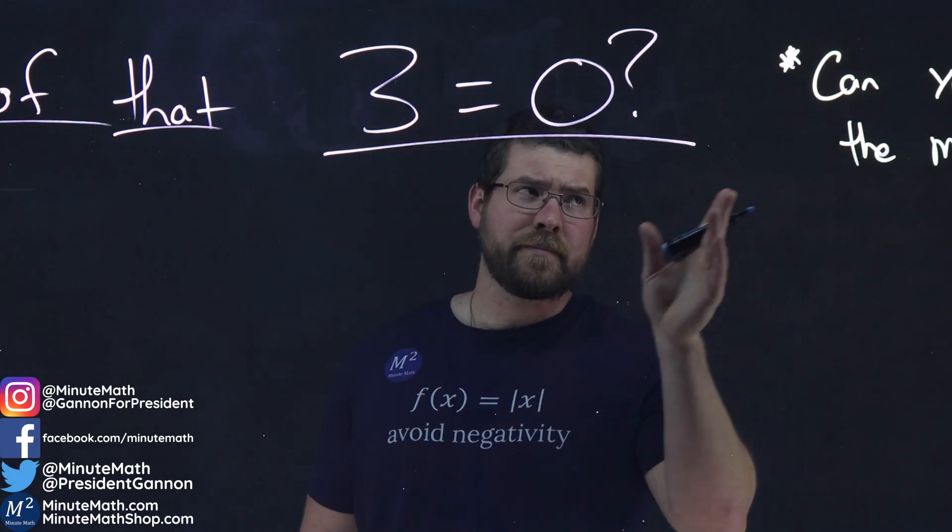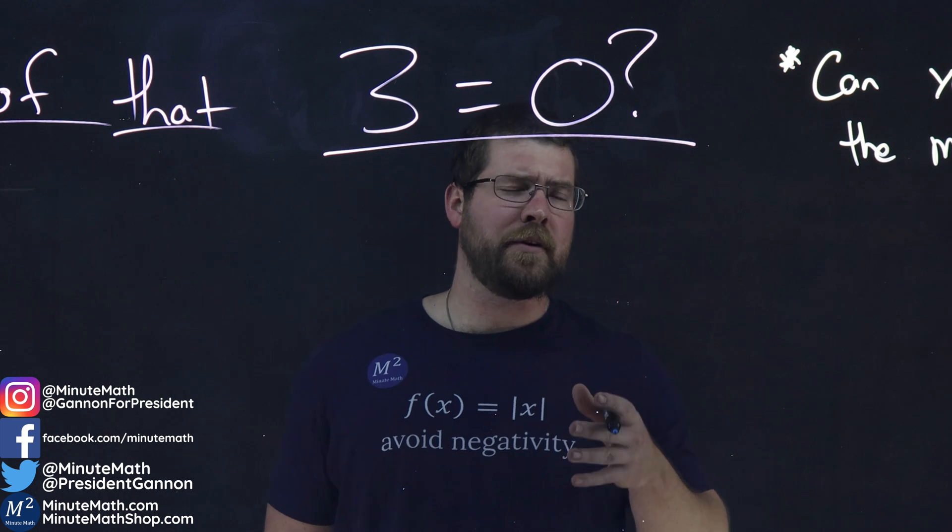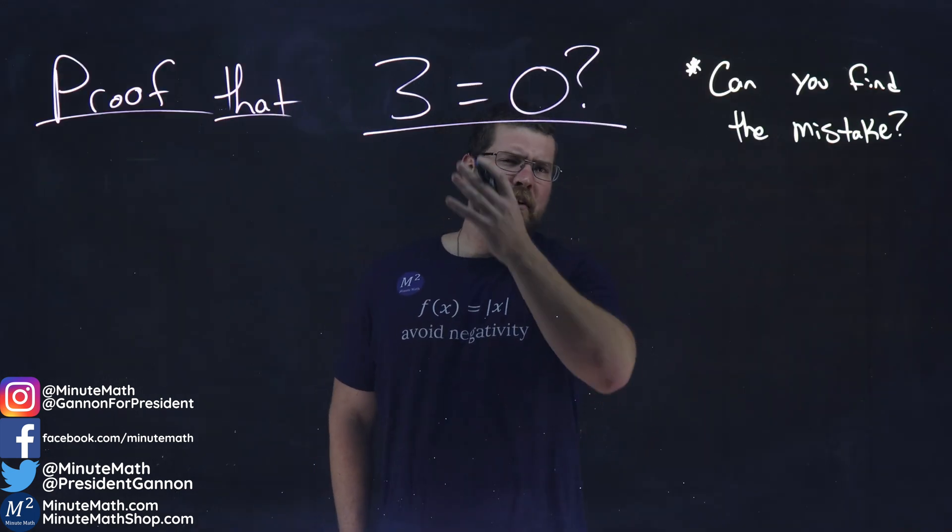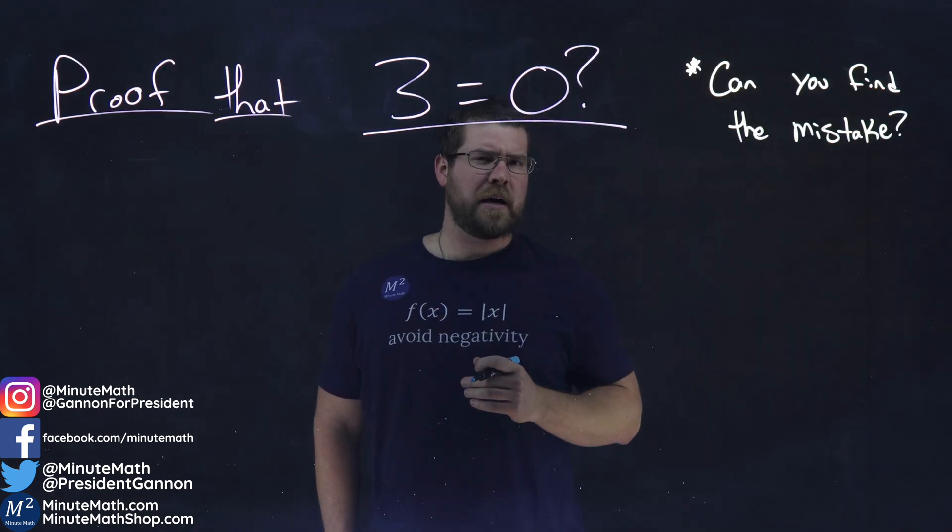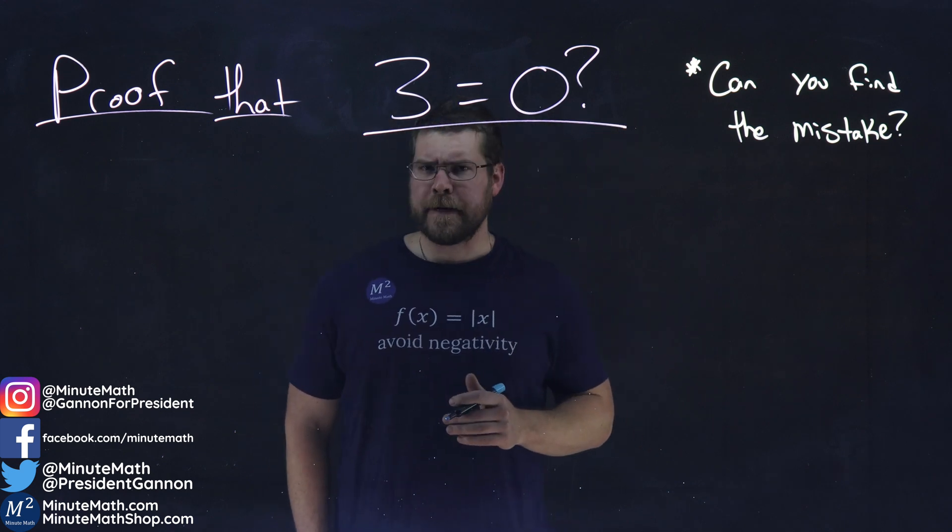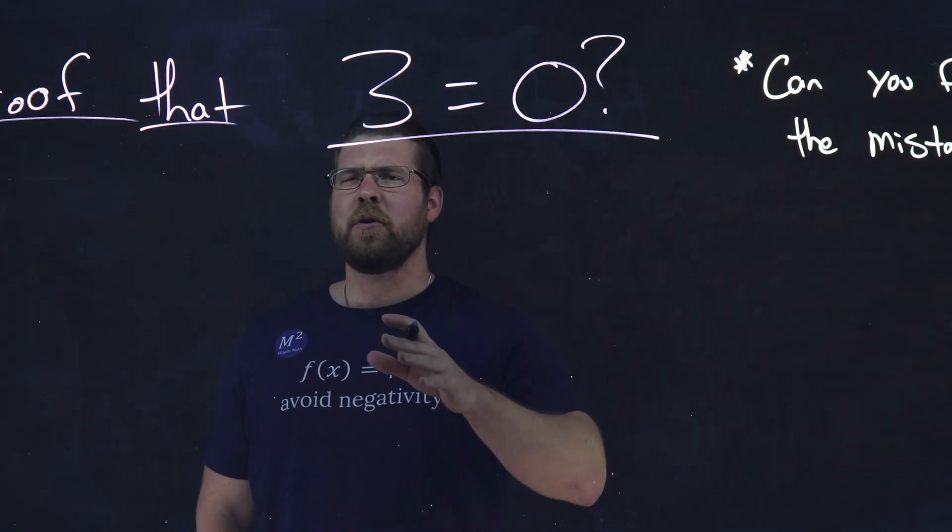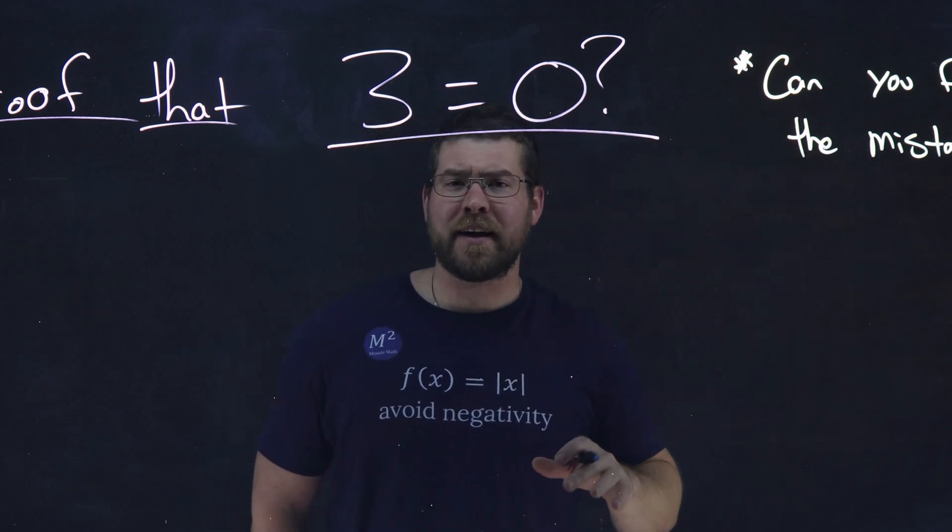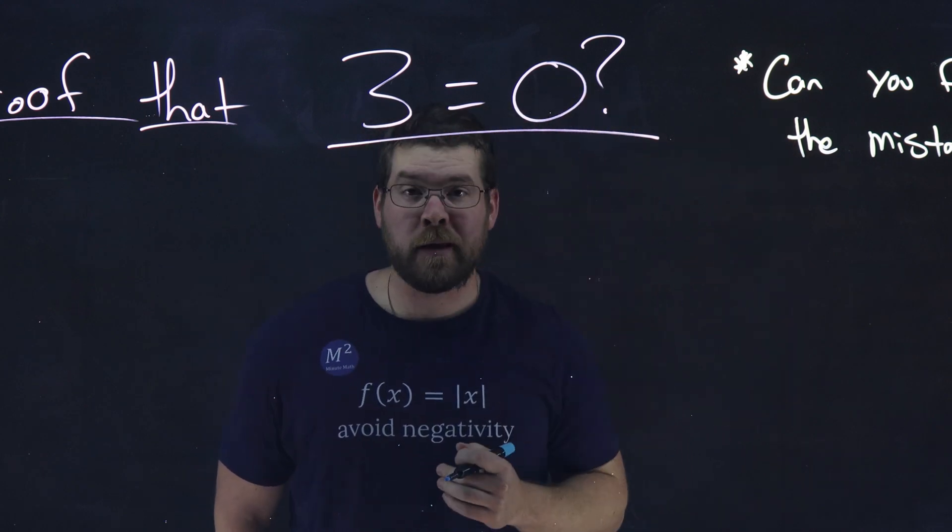Disclaimer: no, 3 does not equal 0. That's not true. But this proof will look pretty logically sound, and there's a mistake in there. I want to see if you can find it. All right, so let's pretend that mistake doesn't exist for a second and just show how 3 equals 0.